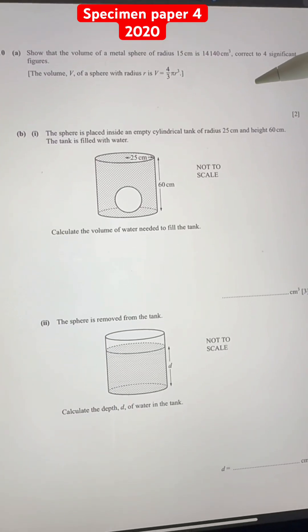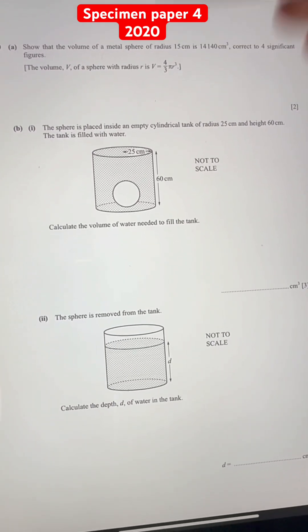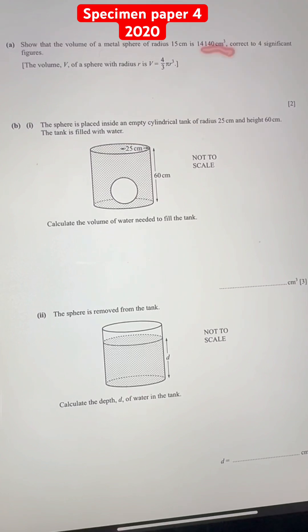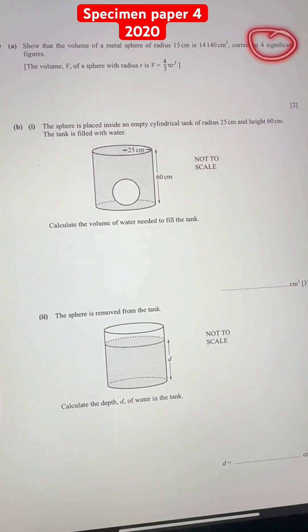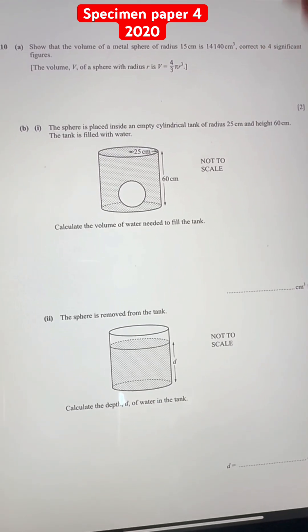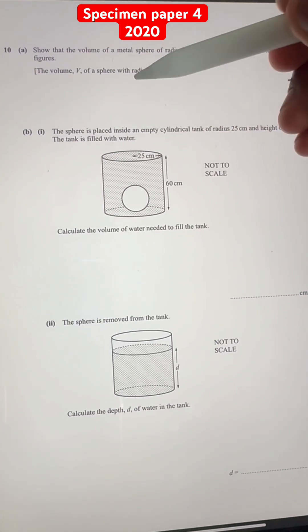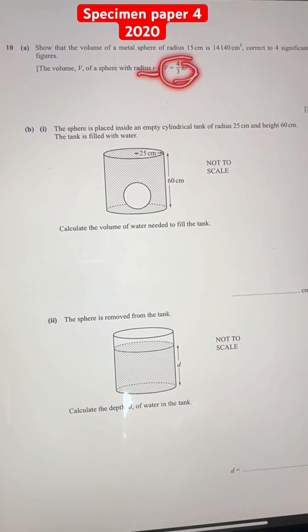Hey, show that the volume of a metal sphere of radius 15 cm is 14140 cm³ correct to 4 significant figures. And we know because the question states that the volume of a sphere with radius r is 4/3 π r³.